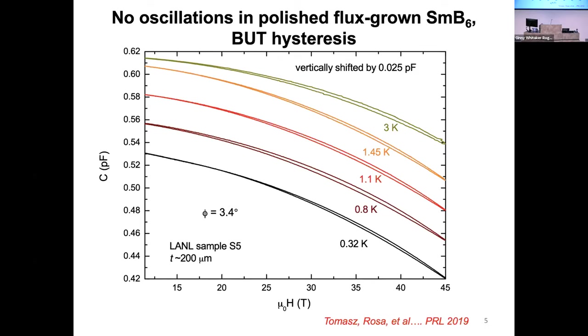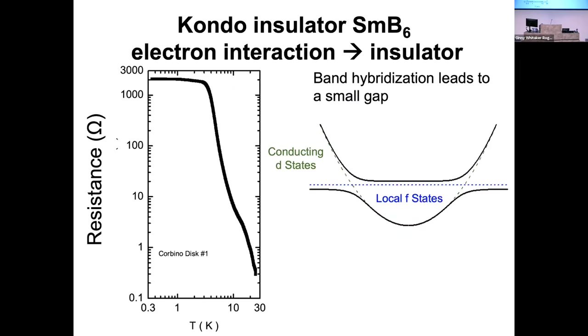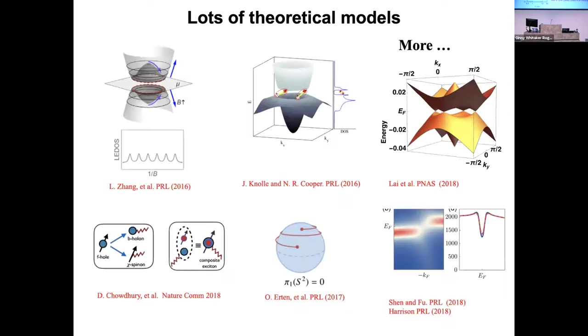What was surprising to us was, instead of oscillations, we started to observe hysteresis. That's a big puzzle. We also confirmed the same feature using samples polished by my colleague Charlie Kodex. Mystery happens. We know the chemical potential is in the gap when we studied resistivity versus temperature. But how come there's a Landau level quantization?